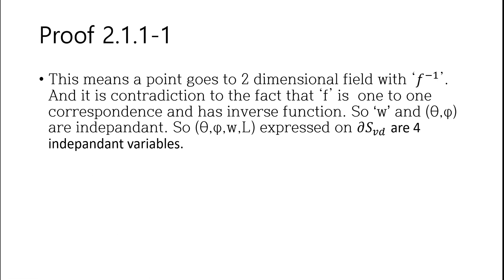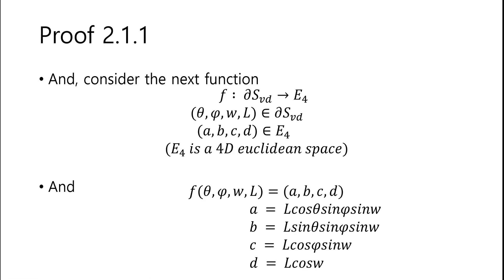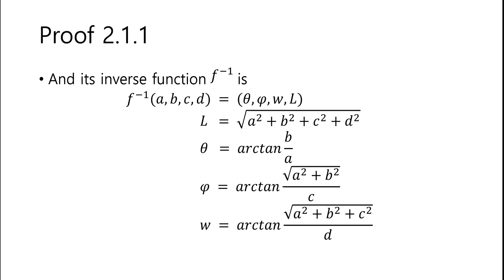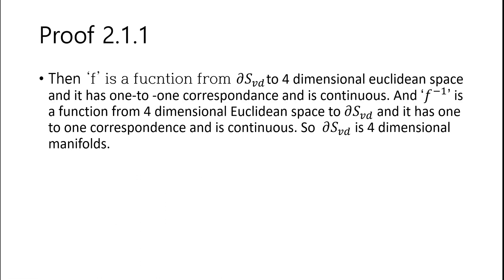So Zeta Phi, omega, L expressed as DS3D are 4 independent variables. Consider the next function and its inverse function. Then F is a function from DS3D to 4-dimensional Euclidean space, it has 1-to-1 correspondence, and it is continuous. Inverse F is a function from 4-dimensional Euclidean space to DS3D, it has 1-to-1 correspondence, and it is continuous. So DS3D is a 4-dimensional Euclidean manifold.